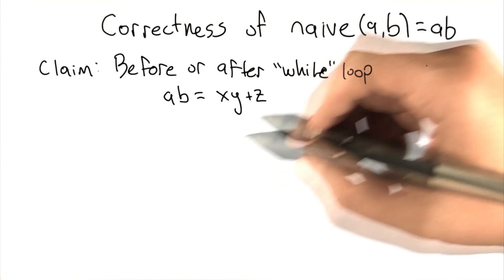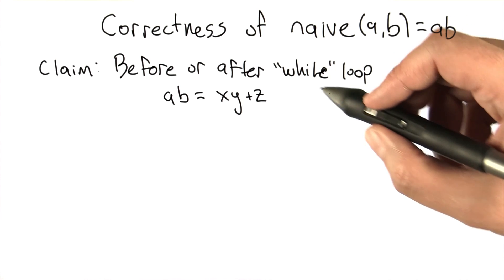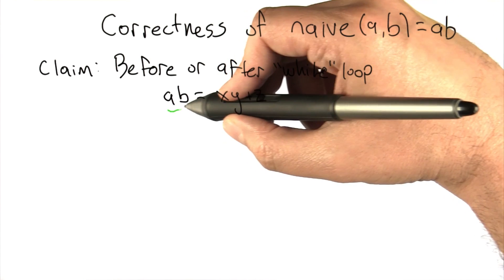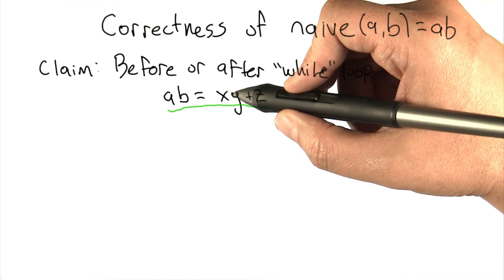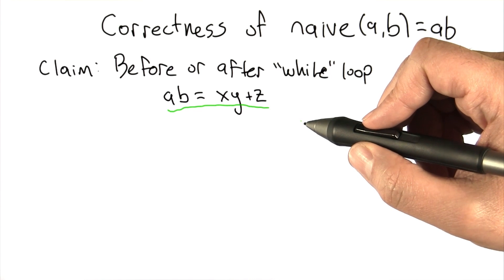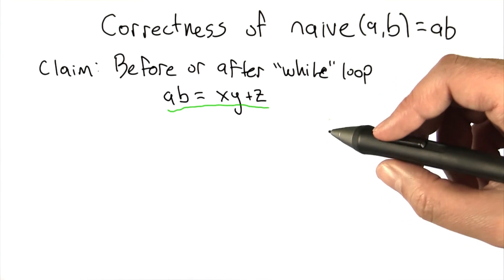The observation that I'm going to make is that before or after the while loop in the implementation of Naive, this statement is always true, that the variables X and Y multiplied together and added to Z is exactly equal to A times B. So how are we going to show that this is the case?